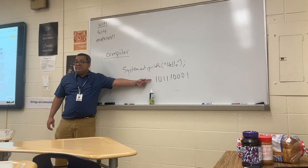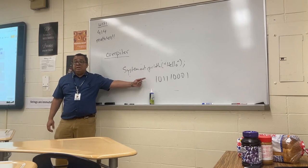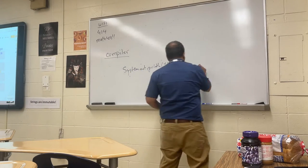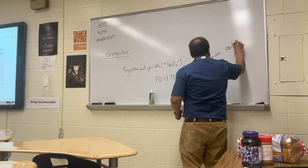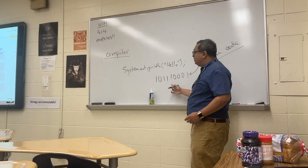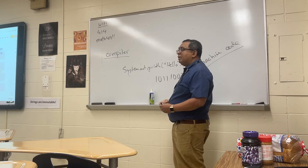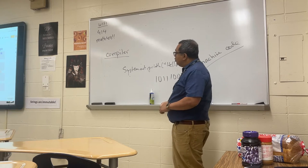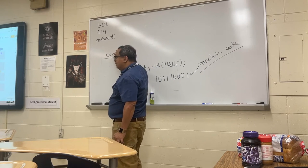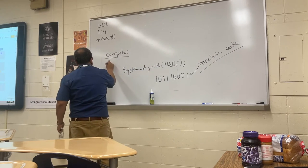Every computer when running only understands ones and zeros — binary. When binary represents compiled code, it's also called machine code. So binary is used for lots of different things; machine code specifically refers to a sequence of binary digits that contains a program that's been compiled. So we need a compiler tool to help us do the compiling, and we also need some sort of editor.